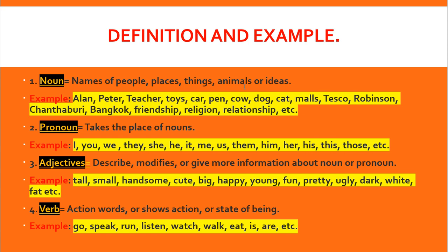For animals, we have a cow, a dog, a cat, pig, or snake. And ideas — examples include your friendship, your relationship, and your religion. That is the example of ideas.